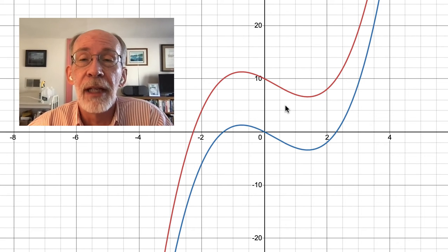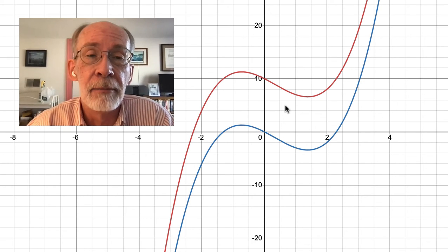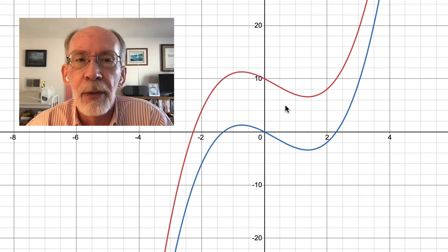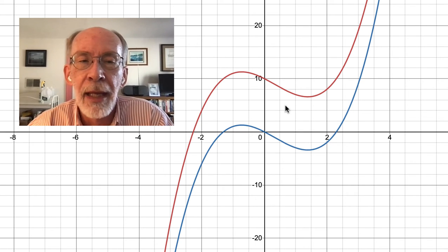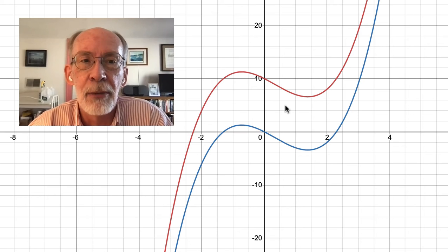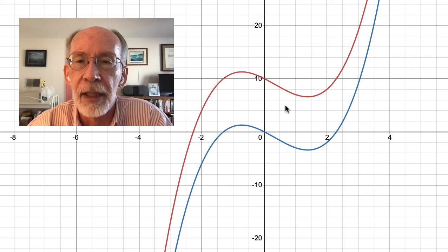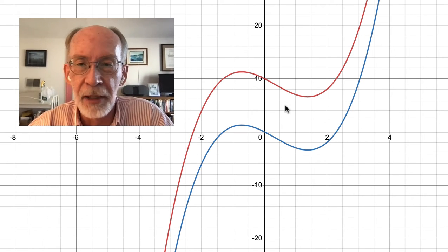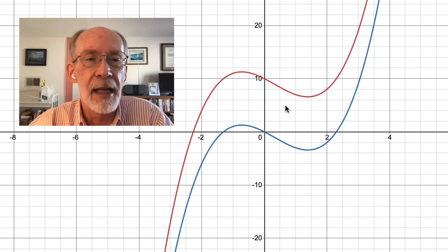Meanwhile, here's our situation. I've got two functions on the Desmos screen, one of which is f of x equals x cubed minus x squared minus 3x, and the other of which is g of x equals x cubed minus x squared minus 3x plus 10, and clearly they differ by a constant, that constant being 10.